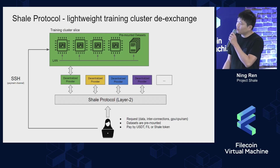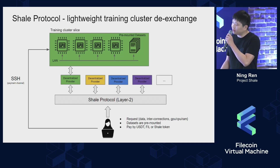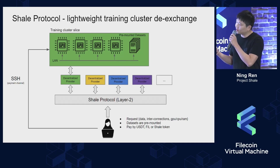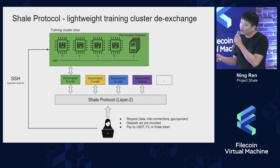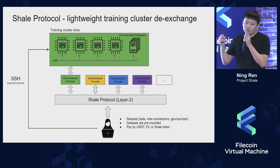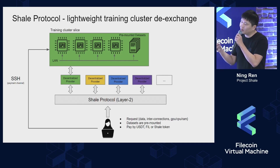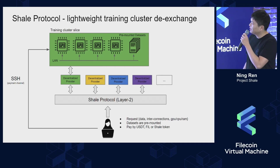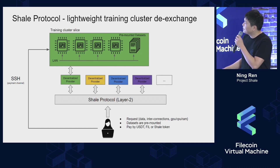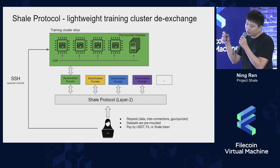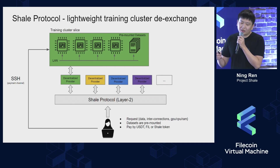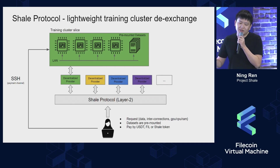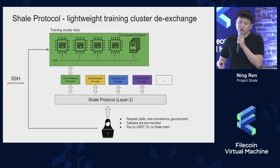Shill Protocol is a decentralized exchange platform where anybody with the right hardware can be a provider and offer such an environment. This lowers the barrier to entry, making the market more saturated and therefore lowering the price.